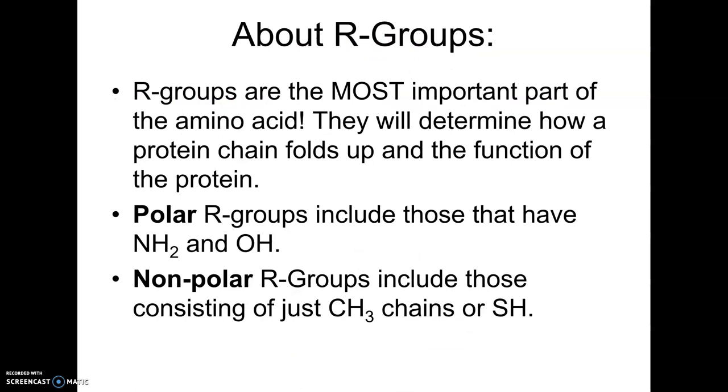A little bit about R groups. They are the most important part. They're the only part that differs in each amino acid. When these amino acids hook together and make a protein, a polypeptide chain, that protein is going to fold up into a shape. And the biggest thing that's going to affect how it folds up will be the R groups. Some R groups are polar. That means they like water. When these proteins fold up, R groups that like water are going to end up on the outside of that protein. This includes amino and hydroxyl groups.